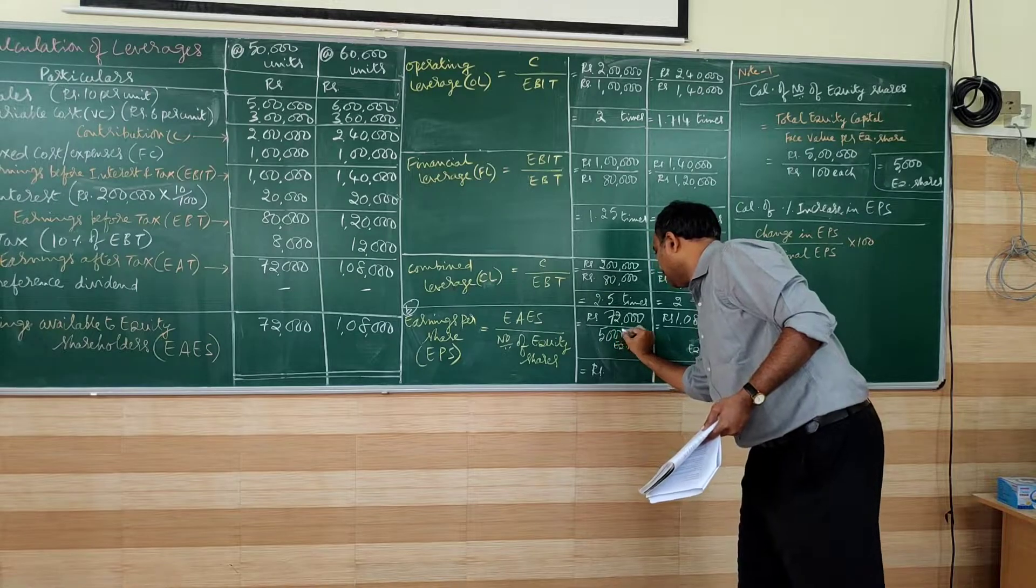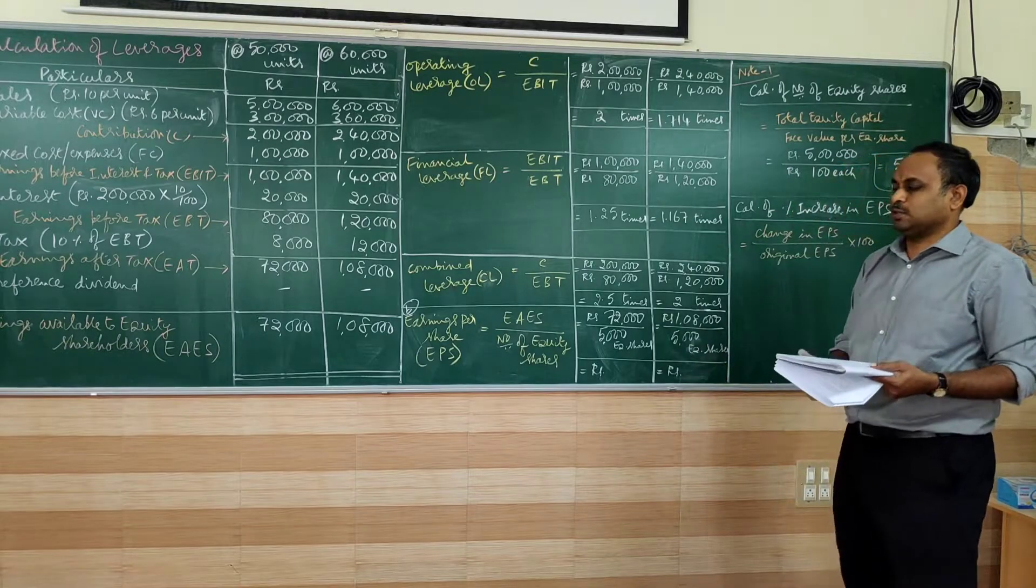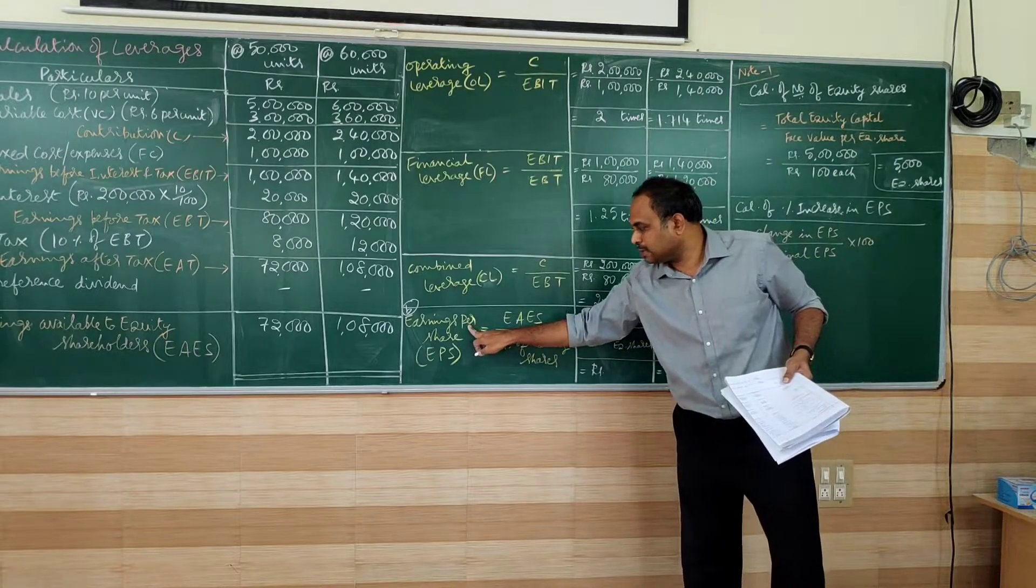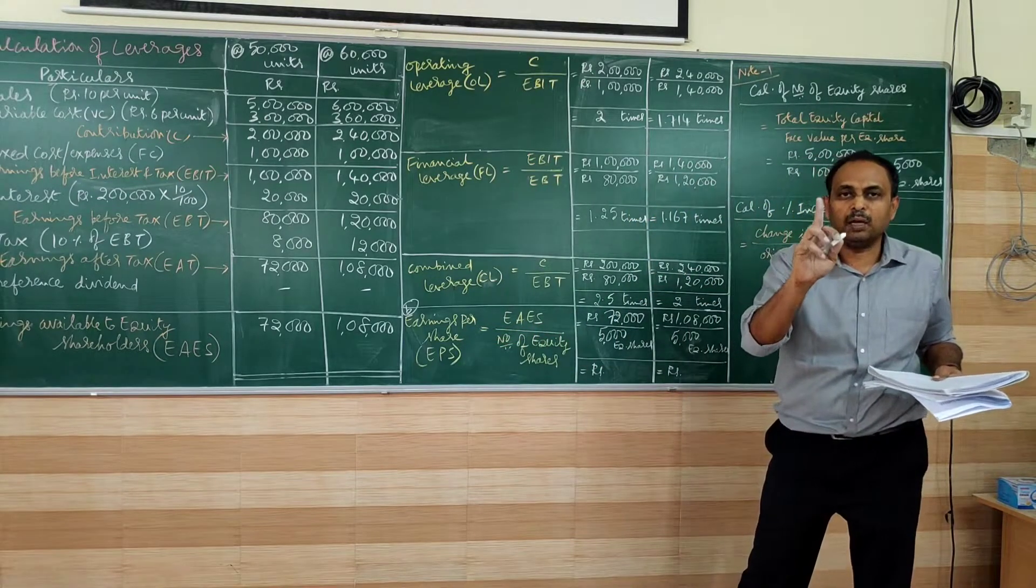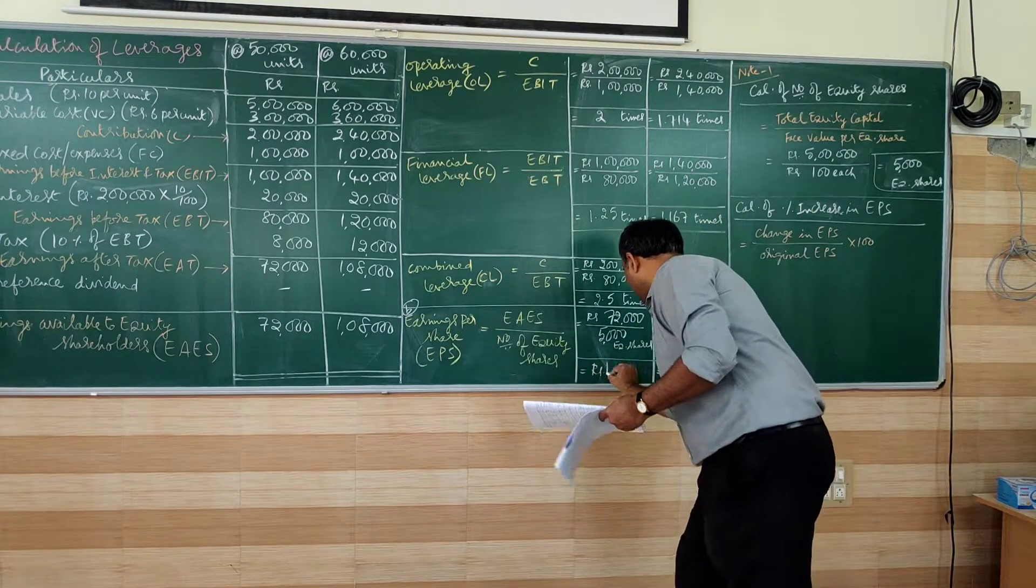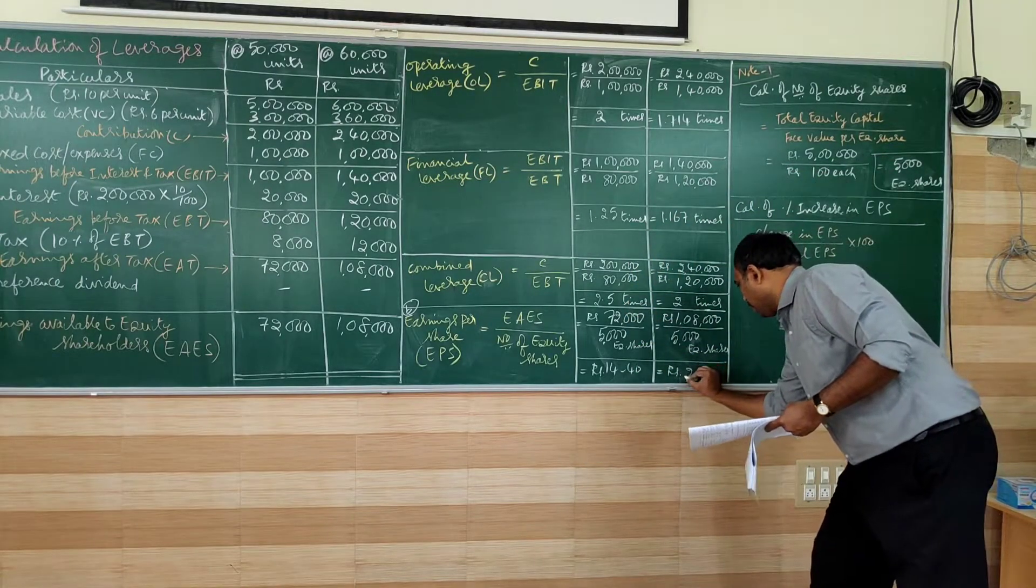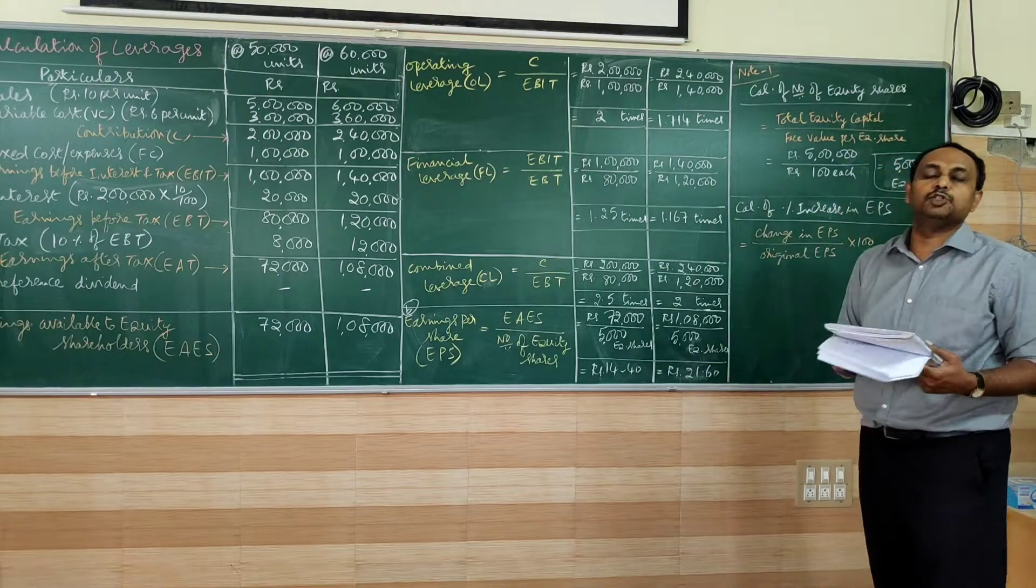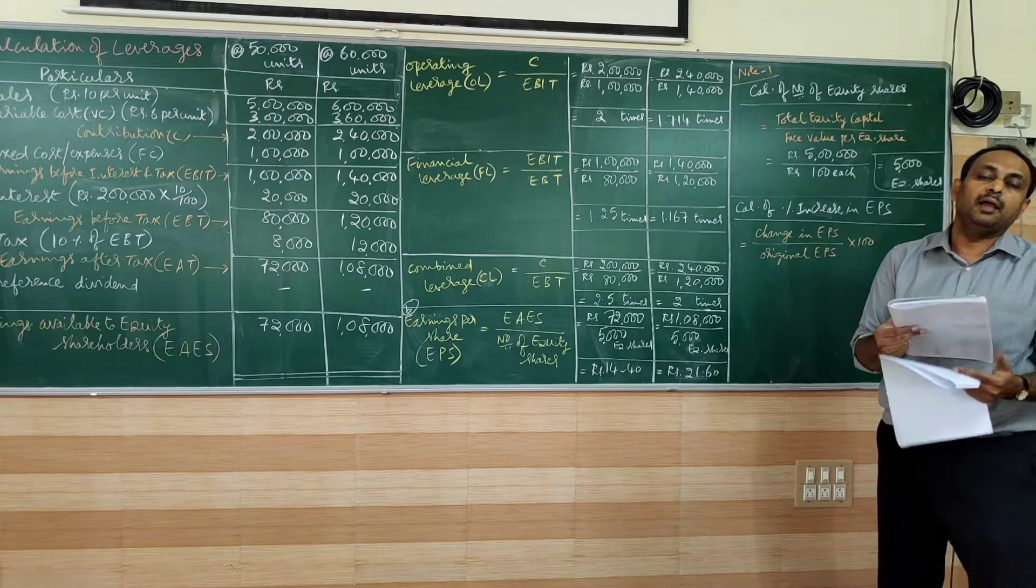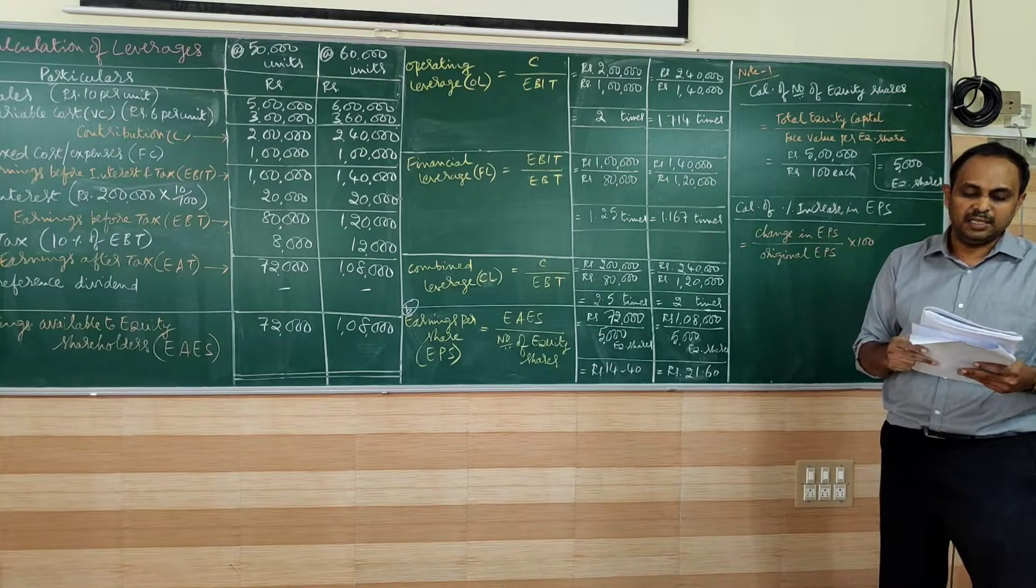So 72,000 divided by 5,000, 1 lakh 8,000 divided by 5,000. When we do this, we are going to get earnings per share. Earnings for one equity share, that is 14.40 for the first situation, 21.60 for the second situation. Second situation is when the sales increases by 20%, 20% increase in sales.